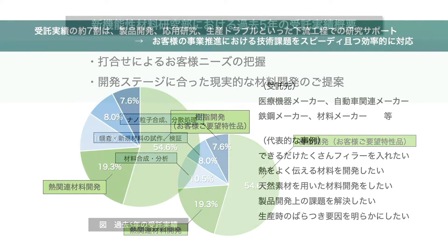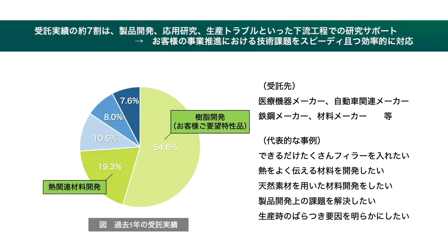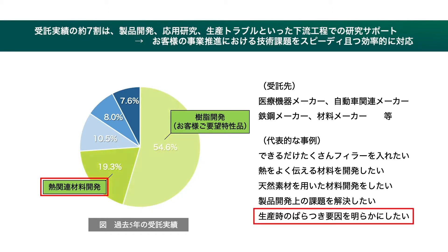新機能性材料研究部では、これまで300社以上のお客様から、上流から下流まで開発ステージにあったご提案・開発を数多く行ってきました。具体的な開発事例として、過去5年の受託研究実績を示します。我が部の受託する案件の約7割は、お客様の製品開発支援を行うような下流工程の案件となっています。特に最近では、熱関連材料の案件が多く、受託の約2割を占める状況です。そのほか、分散や合成に関する知見と分析技術を生かし、生産トラブルの要因解明の支援も行っております。